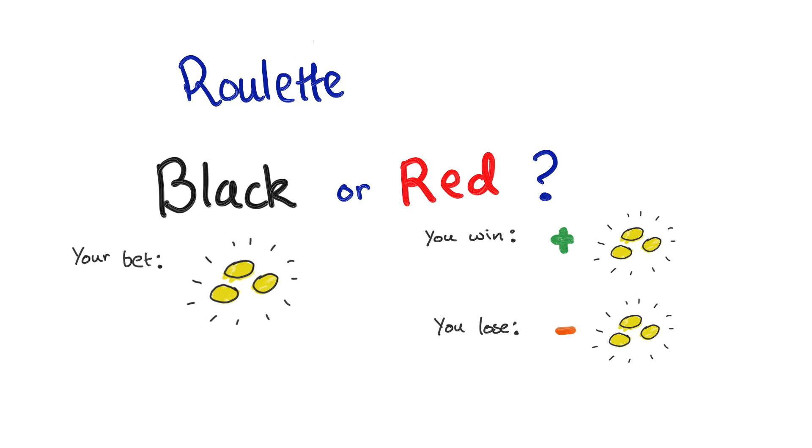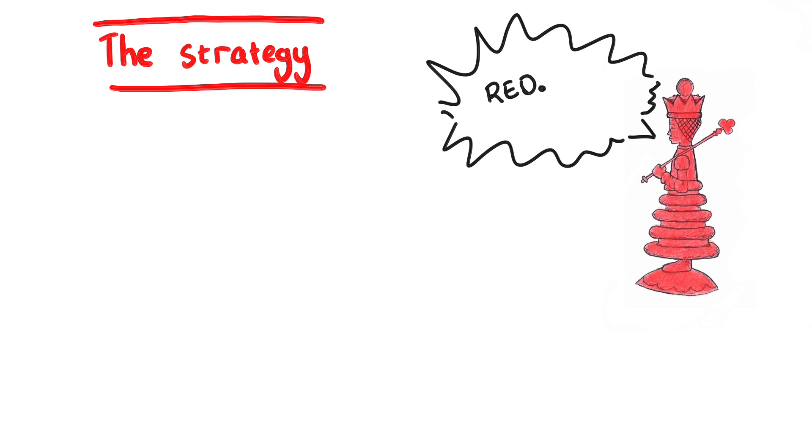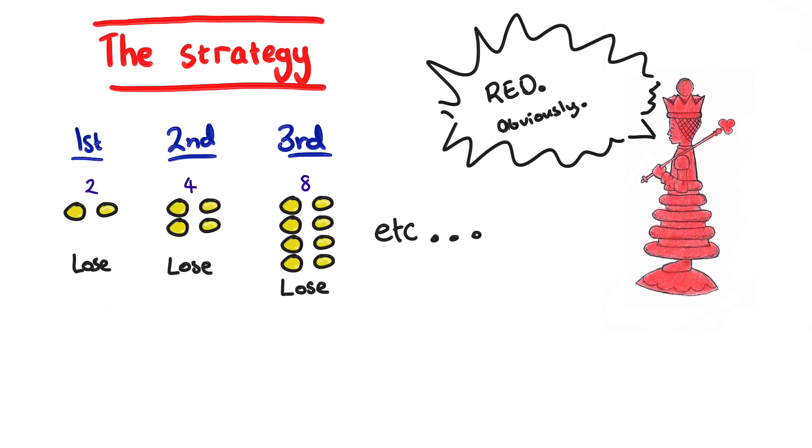It seems like there's nothing you can do to improve your chance of making money. But let's think about this strategy. What if you said, I'll always bet red. First time I'll bet 2, if I win I'll stop. Otherwise I'll play this game again, but this time I'll bet 4, and if I lose I'll bet 8, etc.